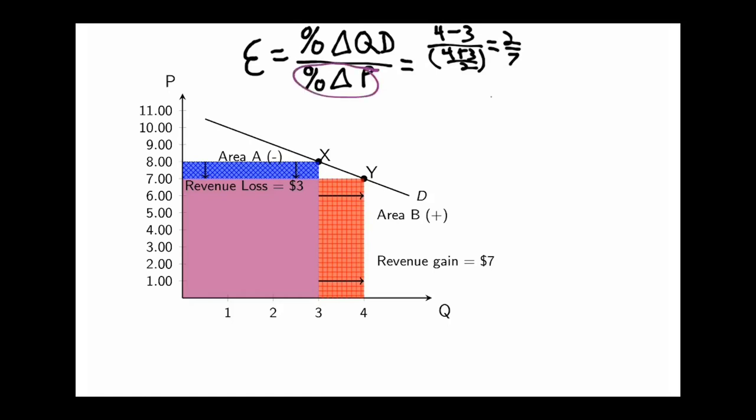I'm going to do the percentage change in price numbers in purple. They will be in the denominator here. The price went from 8 to 7 so we will take 7 minus 8 divided by the midpoint. That's going to equal negative 2 over 15. Now we have this complex fraction. We can basically turn the denominator into 1 by multiplying by its reciprocal and because it's a fraction if you multiply the entire fraction by 1 you're not going to change its value, so let's also multiply the numerator by that reciprocal.